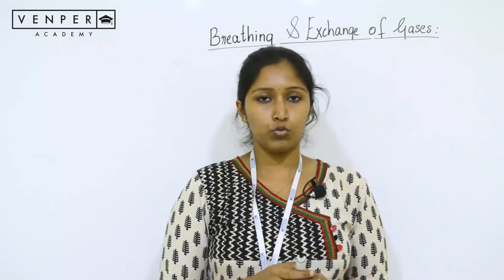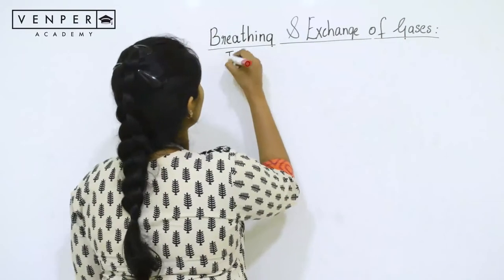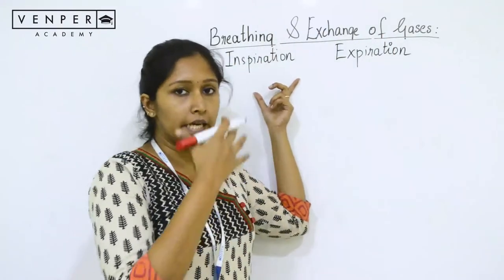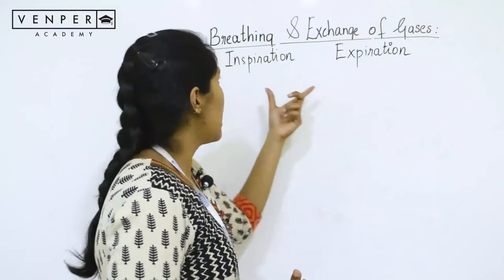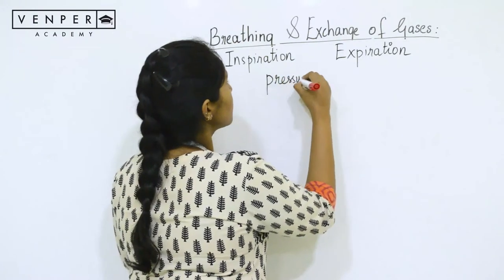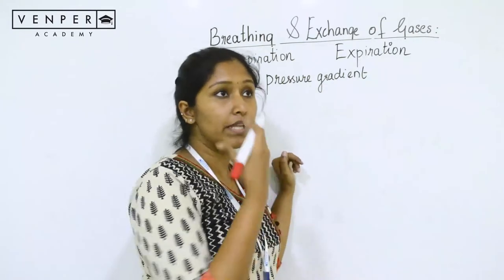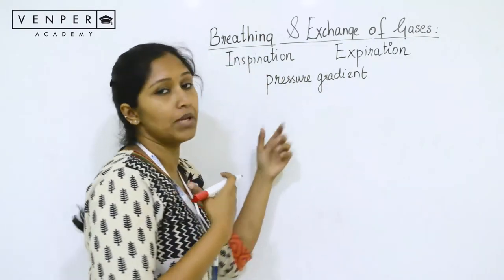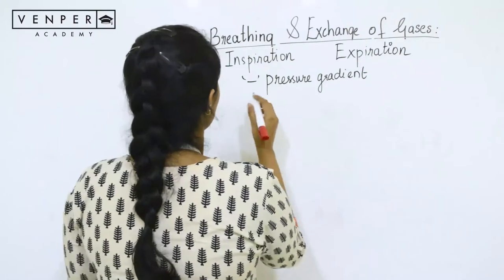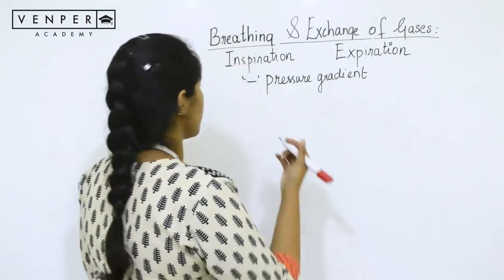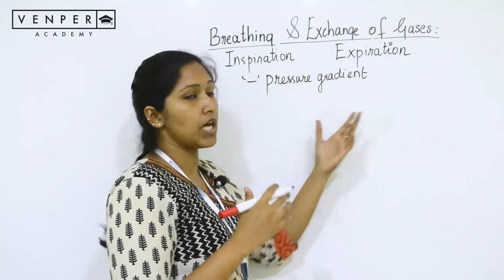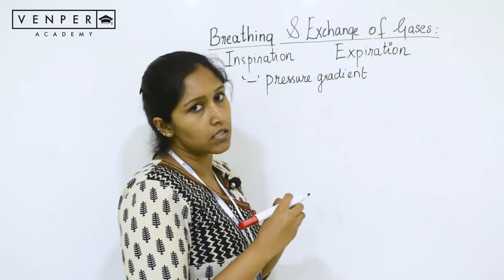The process of breathing involves two things: inspiration and expiration. Inspiration is inhalation of air while expiration is exhalation. To bring about these processes, a pressure gradient must be maintained between the atmosphere and the lungs. Usually the lung has a negative pressure gradient compared to the atmosphere. The main muscles responsible for inspiration and expiration are the diaphragm and the external and internal intercostal muscles.